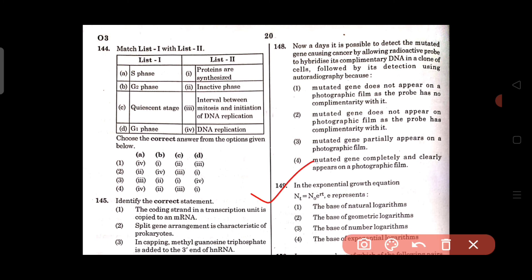Question number 149: In the exponential growth equation, NT = N0ERT, E represents the base of natural logarithm, the base of geometric logarithm, the base of number logarithm, or the base of exponential logarithm. Option 1 is the right answer, that is the base of natural logarithm.